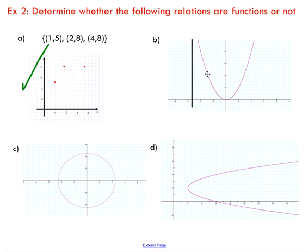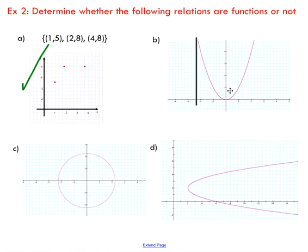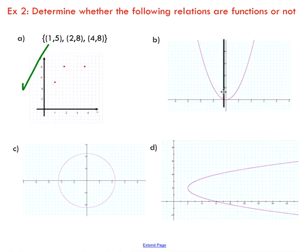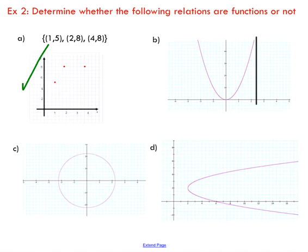Part B should look pretty familiar — this is a parabola. You pass your vertical line through your parabola and you can see, as you move from left to right, there's only ever going to be one point on my vertical line at a time. So this one definitely is also a function.